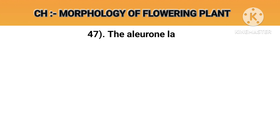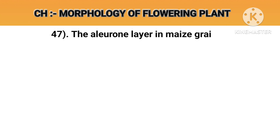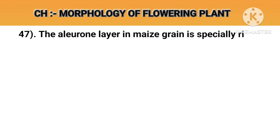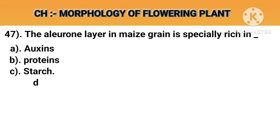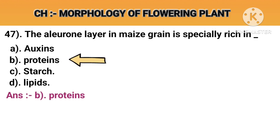Question number 47. The aleurone layer in maize grain is specially rich in. Option A: Auxins. Option B: Proteins. Option C: Starch. Option D: Lipids. Answer B: Proteins.